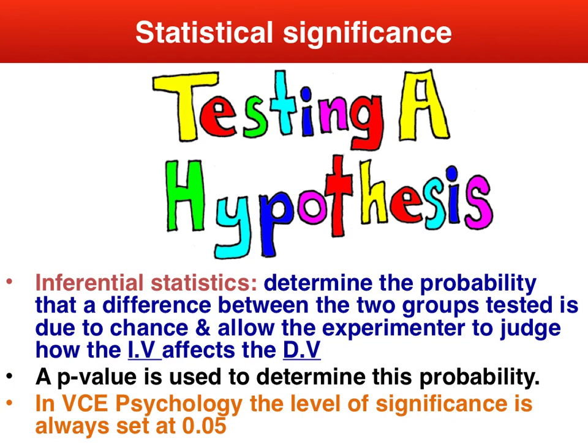It's important to emphasise in psychology that there are two major categories of statistics. Firstly, we've got descriptive statistics that merely summarise, organise and, as the name implies, describe a set of data — for example, measures of central tendency such as your mean, median and mode, or measures of spread such as range, variance or standard deviation.